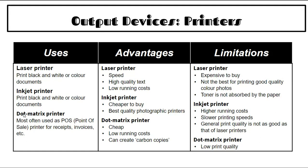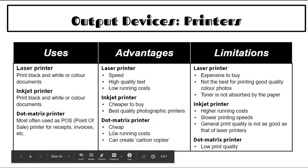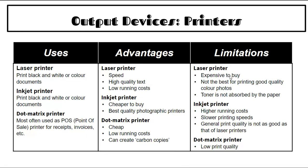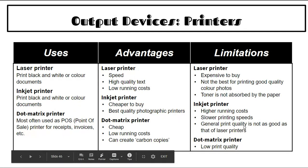Printers: laser, inkjet, and dot matrix. Laser is super fast, high quality text, and low running costs — best for printing many black-and-white pages, but expensive to buy and not ideal for color photos. Inkjet is cheaper to buy and better for photographic printing, but has higher running costs and prints slower. Dot matrix is cheap with low running costs and can create carbon copies — often used in doctors and dentists. It has low print quality.